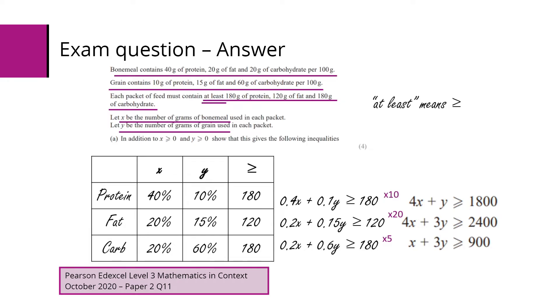0.2x plus 0.15y must be greater than or equal to 120. 0.2x plus 0.6y must be greater than or equal to 180. So if we multiply those inequalities we can then get the required constraints.